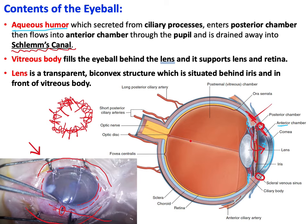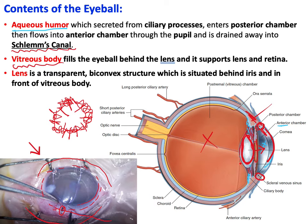Inside the eye there is also the vitreous body — a gel-like structure located behind the lens. It supports the lens and supports the retina from inside, preventing retinal detachment. Sometimes detachment does occur despite this support.